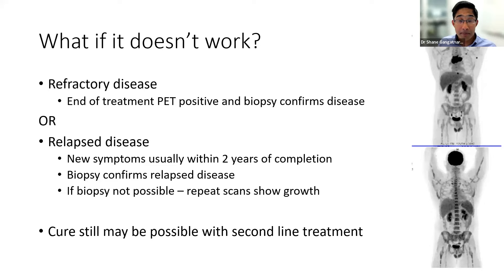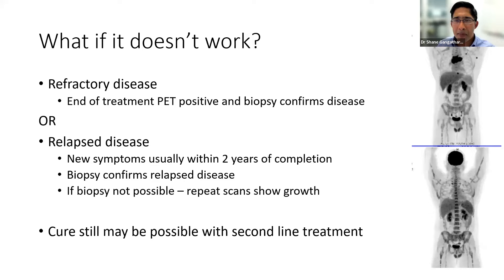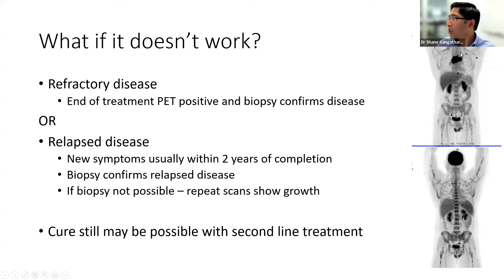What if the treatment doesn't work? We call it refractory disease if a PET scan at end of treatment still shows residual disease. We call it relapsed disease if the end-of-treatment PET was clear but a mass grows back later. PET scans can show infection and inflammation, so we often biopsy to confirm actual relapsed Hodgkin lymphoma, as it has major implications. Cure is still possible with second-line treatment.